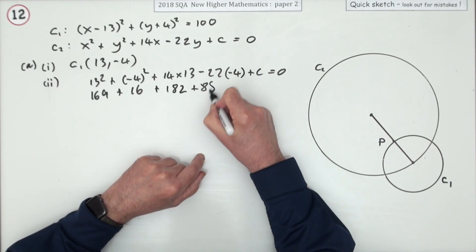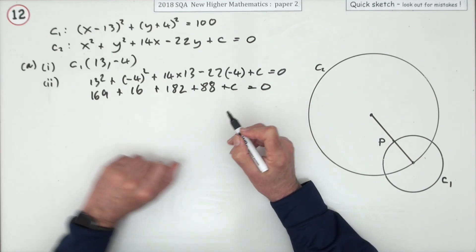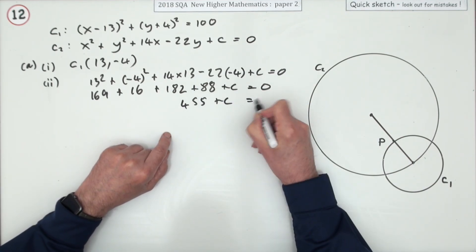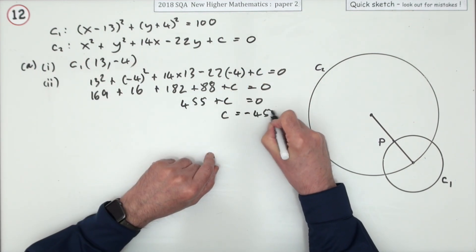Plus 88 plus c equals zero. You can add them up—I'm just trusting that comes to 455 plus c equals zero. It's only one mark all of this, so c is negative 455.